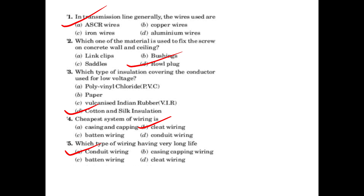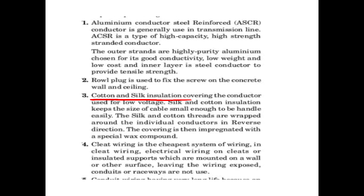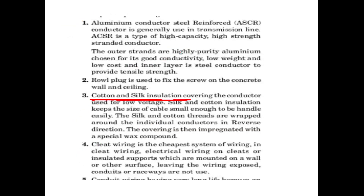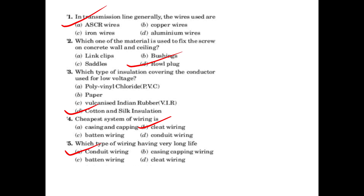First question: In a transmission line, generally, the wires used are ACSR wires. What is ACSR? ACSR stands for Aluminium Conductor Steel Reinforced. We use Aluminium Conductor Steel Reinforced wires in transmission lines.